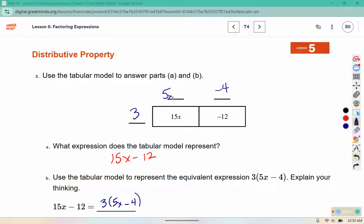Well, we know 3 is a common factor of 15 and 12. So it can be factored out.